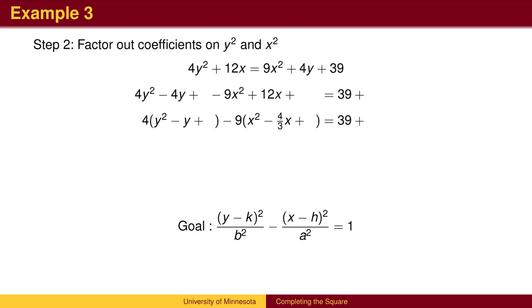We then figure out what terms will be squared. To get y squared minus y, we cut the minus 1y in half, so we will square y minus 1 half. Similarly, half of 4 thirds is 2 thirds, so we will square x minus 2 thirds.